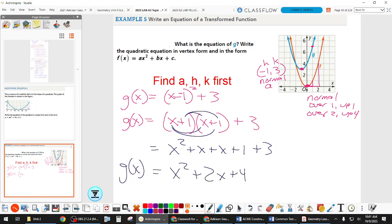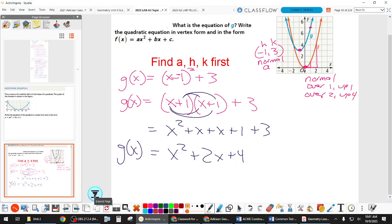So G of X in standard form will be X squared plus 2X plus 4. Pretty soon, you'll be seeing that form, and I'll ask you to factor it back if you can, and give me the intercepts, the X intercepts.